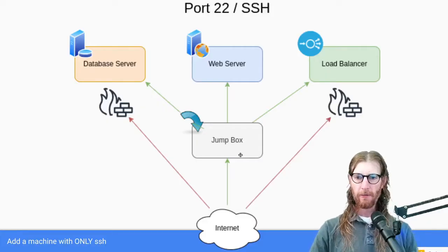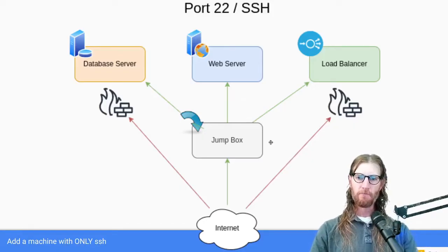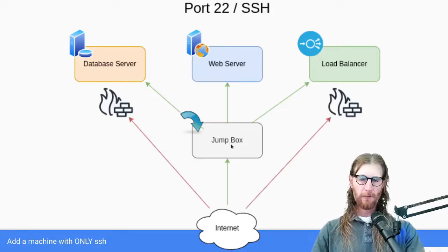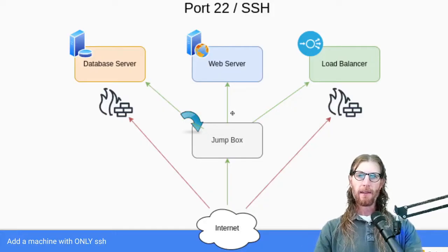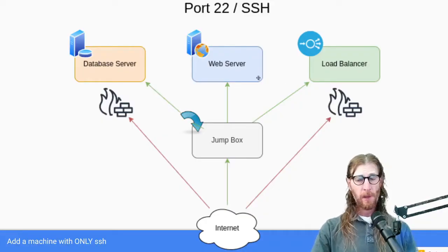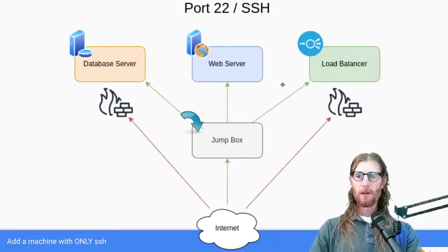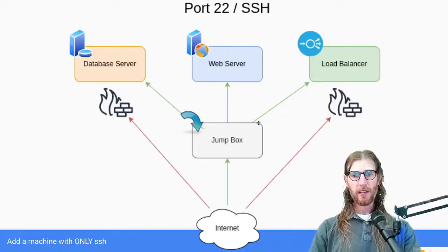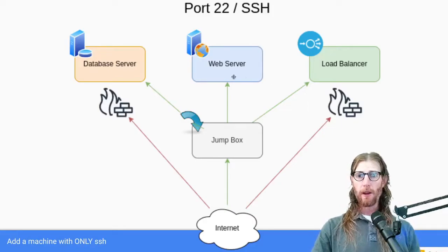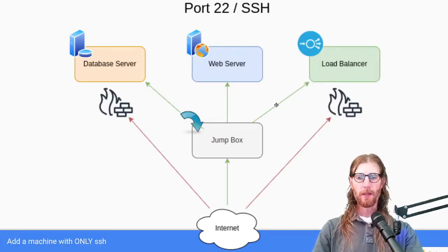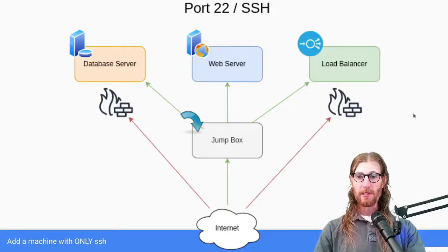You can also do a highly available setup with multiple jump boxes so if one goes down you still have access. Using this method you can very aggressively update the jump box — most people set it to auto-update — and you don't need to worry about it as much. You still obviously want to install security updates on the other machines and their SSH daemons, because if the jump box were compromised, those machines could be compromised too if they're not kept up to date. But it's defense in depth — the firewall prevents the SSH daemon on those machines from being seen from the internet.